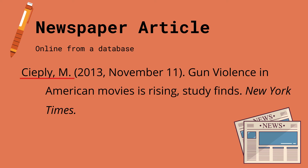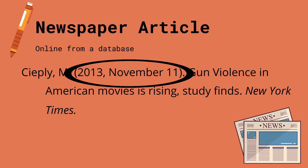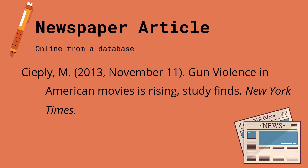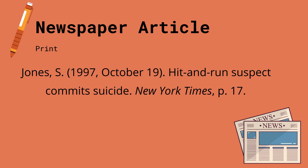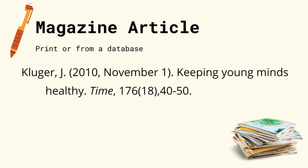For online newspaper articles from a database, begin with the writer's name, then the date when the article was written. You have to be specific in terms of the date — begin with the year, comma, month, and the date — then the title of the article, and the name of the newspaper in italics. For online newspaper articles with no author, begin with the title of the article, then the date, the name of the newspaper, and make sure to include the link. For printed newspaper articles, the format is the same, but you have to include the page number where the specific article can be found.